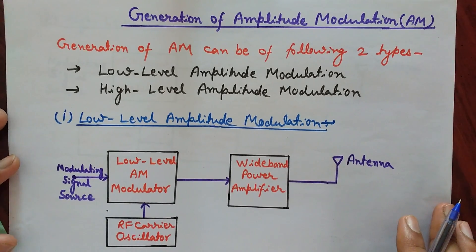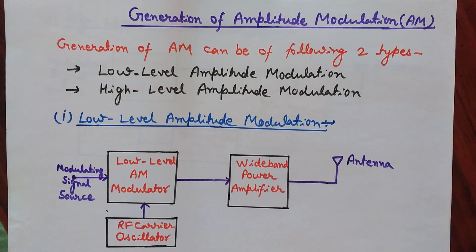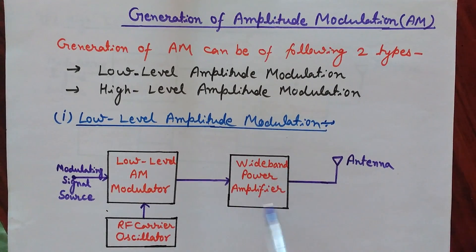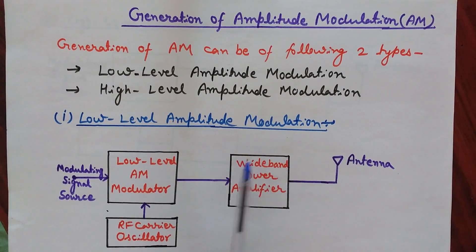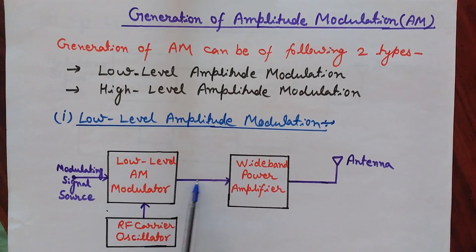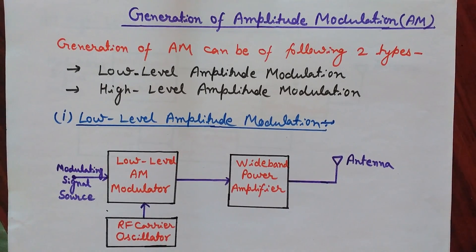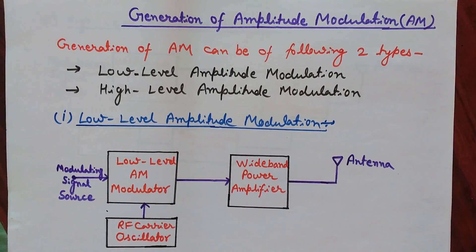In a low-level amplitude modulation system, modulation is done at low power levels — very low power is associated with the carrier wave and the modulating signal. At the output we get low power levels, so we use wideband power amplifiers to boost the signal to the desired level. Wideband is needed to preserve the two sidebands of the AM modulated wave. These systems are also known as low-level AM transmitters. Examples include the square-law diode modulator and switching modulation.